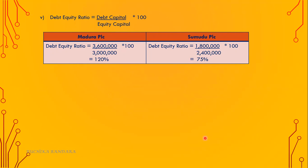The last part: debt equity ratio equals debt capital divided by equity capital into 100. For Maduro PLC, debt capital is the long-term loan of 3,600,000, and equity capital is 3,000,000 — that's 120%. For Sumudhu PLC, long-term loan of 1,800,000 divided by equity of 2,400,000, into 100 — 75%.